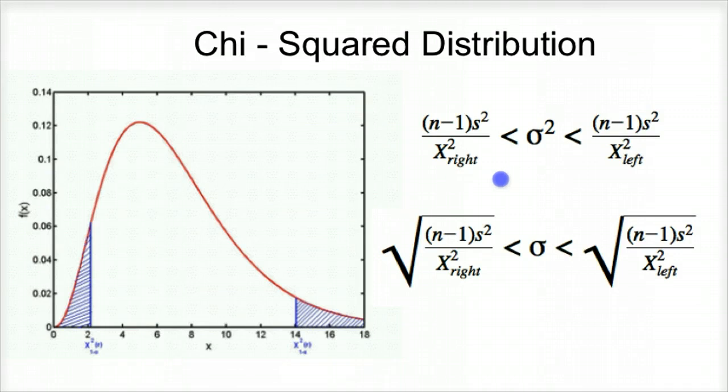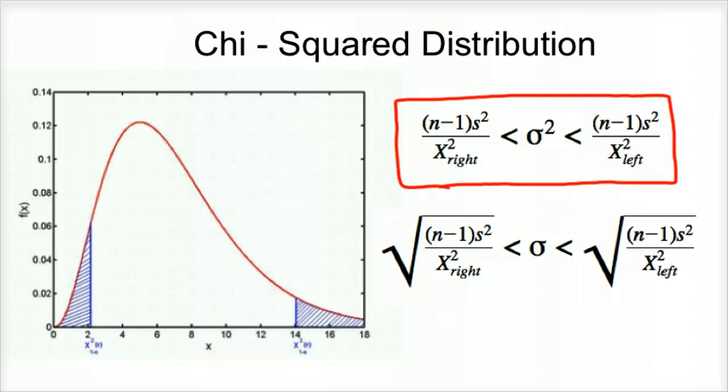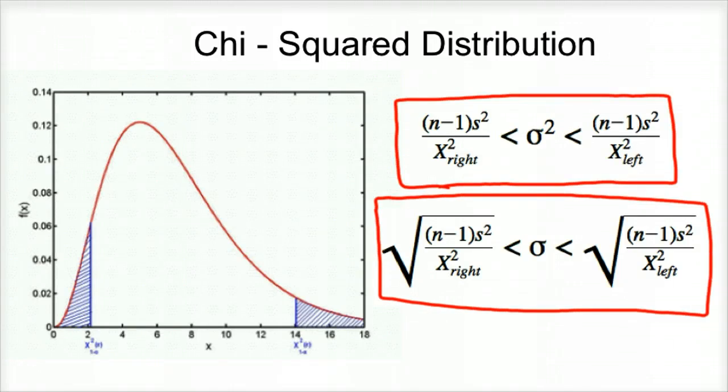And so on the top formula here, this is the formula used to, from a sample of data, whatever size of sample you choose, this will tell you with whatever percentage confidence you want, whether it's 90%, 80%, 95%, or 99% confidence, what the variance of the entire population is when you select just some of the data, a sample of the data. And then this bottom equation, bottom formula, is the standard deviation for the entire population with just a handful of samples.